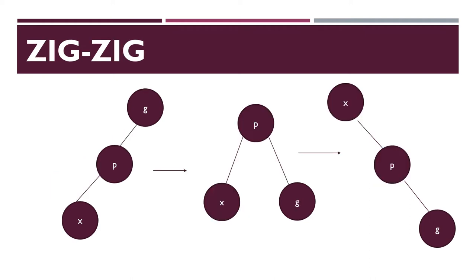Next, the nodes are towards the left side. Rotate node G to the right side, then it will be the root node as P, with X and G as the leaf nodes. Again perform zig rotation, then the nodes will be on the right side like X, P and G. So this is zig-zag rotation.